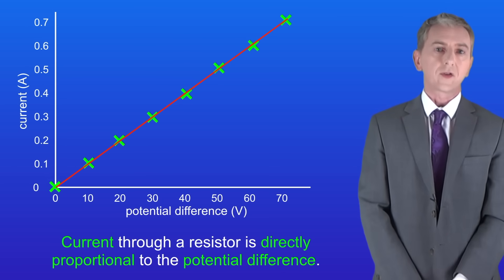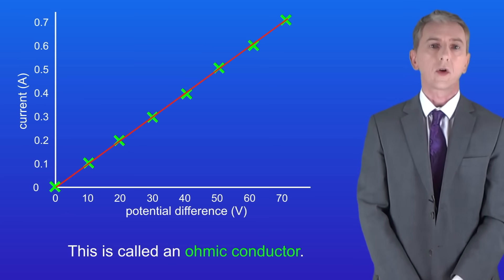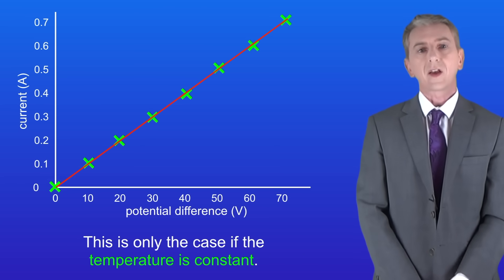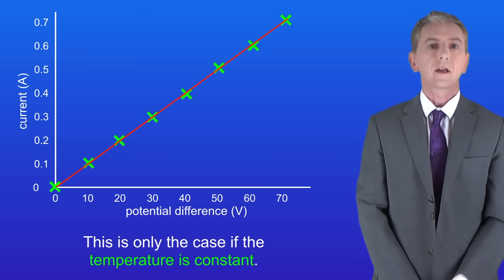Now this tells us that the current through a resistor is directly proportional to the potential difference, and scientists call that an ohmic conductor. However, as we saw, that's only the case if the temperature is constant. So in this video we're looking at a different kind of resistor.